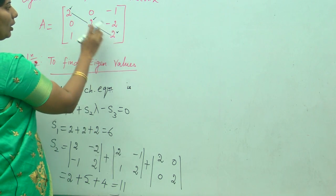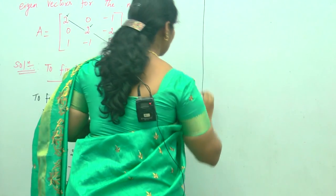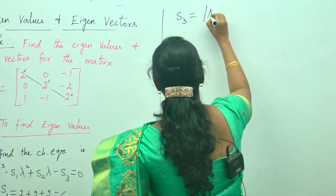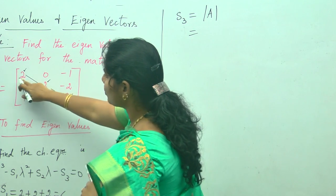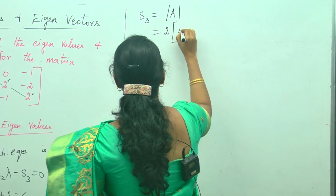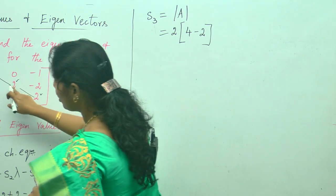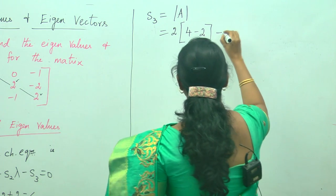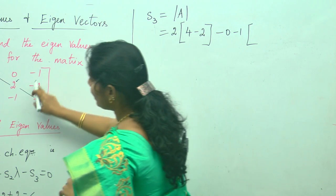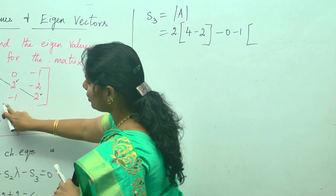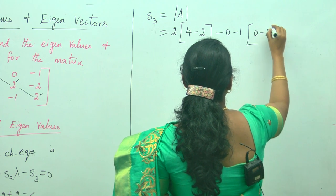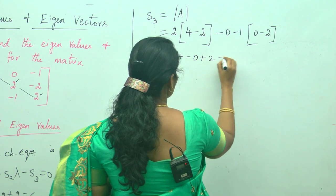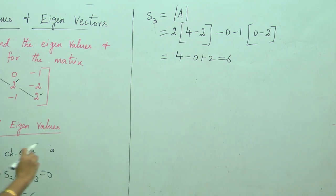S3 is the determinant of A. First, take 2 into (4 minus 2) — cross multiply. Next element is 0, so that whole term becomes 0. Then minus 1 into — leave the corresponding row and column — what is left gives (0 minus 2), which is 0 minus 2. So: 2 into 2 minus 0 plus 2, giving S3 equals 6.